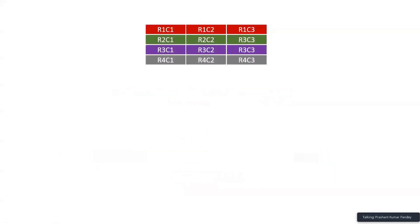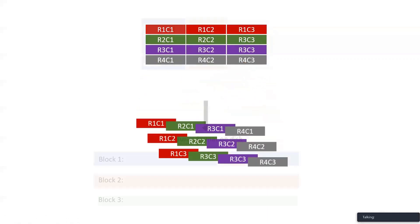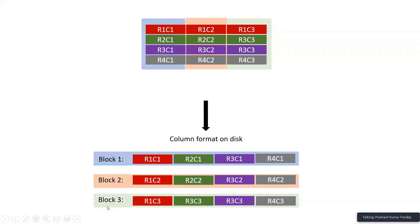Now think about what happens if we have a columnar format. We come back to the same table - the same four records, three columns. I saved it as a columnar format, maybe Parquet format. In the columnar format, the entire column one is stored in one block. Then this entire column two is stored in the next block. And then column three is stored in a third block. You may have two sets of columns stored in one block depending upon the block size, but usually all column values are stored together.